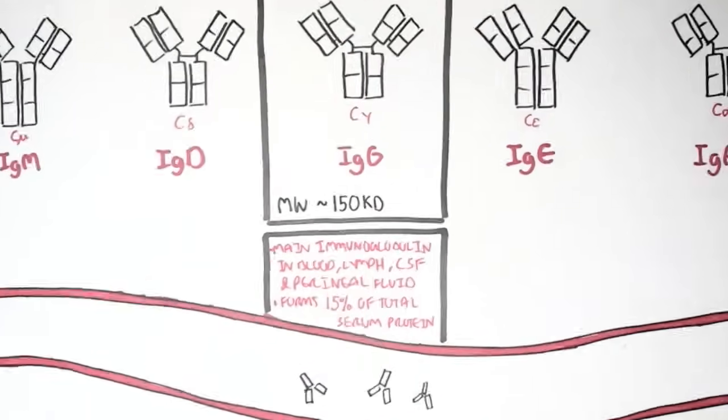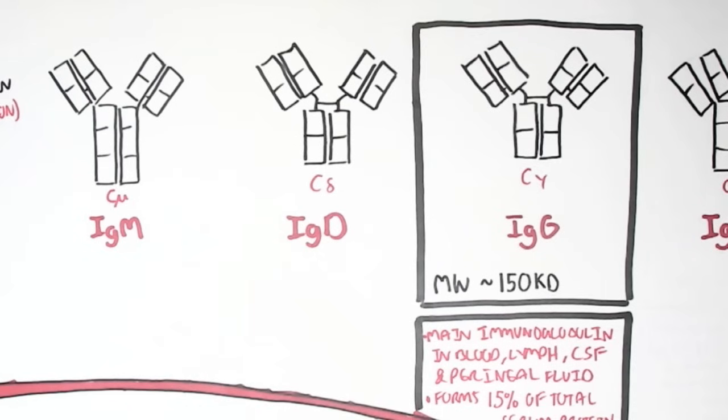So that was for IgG, the properties and functions of IgG. However, some of the properties and functions of IgG are also shared with other immunoglobulin isotopes, such as IgM. And we'll look at IgM now.